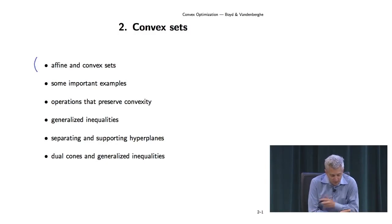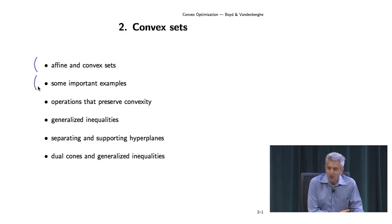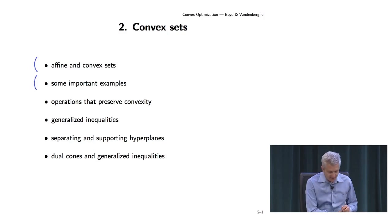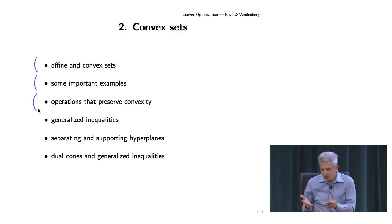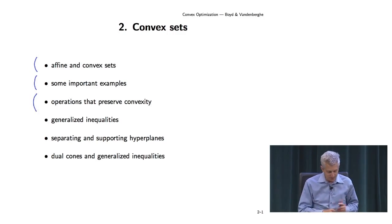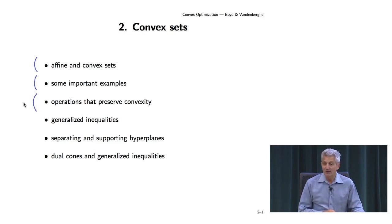Then we're going to look at a catalog of some very important examples — things like balls, half-spaces, or rays. Then we'll focus a bit on operations that preserve convexity, like the intersection of two sets or a sum. The basic idea is that'll form a calculus of convex sets.